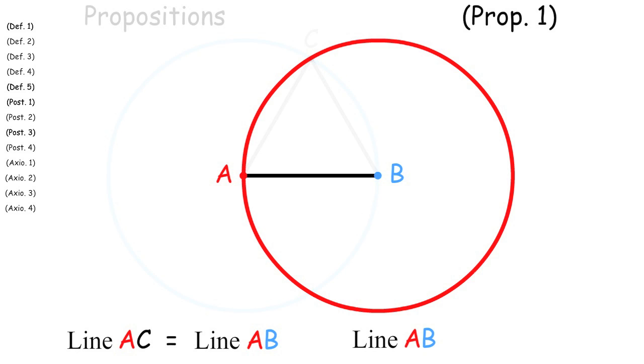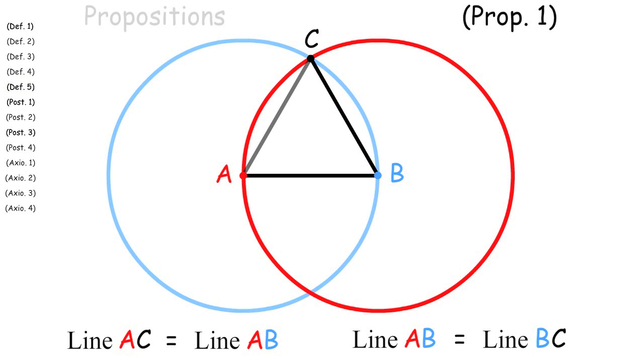Next we look at circle BA and we see that line AB is the radius but we also see that line BC is the same radius and again by definition 5 they are equal.